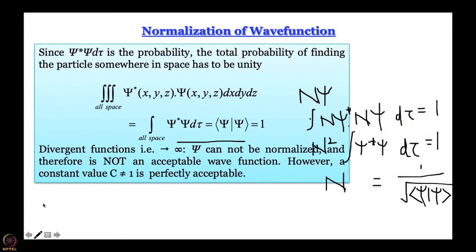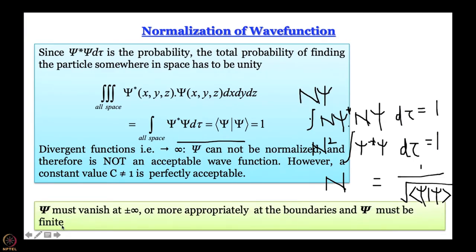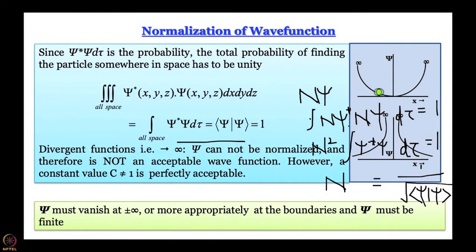Now there is an important condition: you cannot normalize a function that is divergent. ψ has to vanish when the coordinate variable becomes plus or minus infinity. So the boundary condition is that ψ must be finite and tend to zero at boundaries. Functions that diverge at infinity or blow up in the middle are not allowed — two such examples are shown here and are unacceptable wave functions.